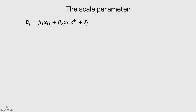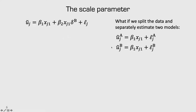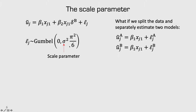Using an interaction dummy coefficient in a utility model is the preferred approach for controlling for differences between groups. But what if we just split the data and separately estimated two different models for group A and group B? It turns out that's problematic, mainly because of the error term. To get a logit model, we make a specific assumption: the error is Gumbel distributed with mean 0 and some variance, which depends on an unknown scale parameter sigma squared.